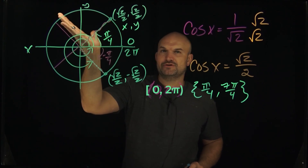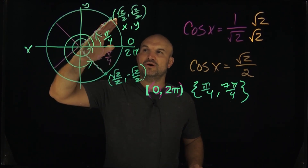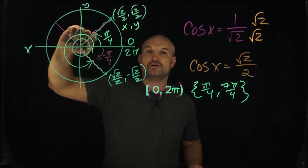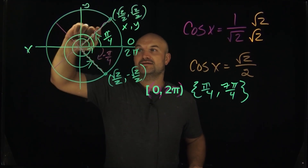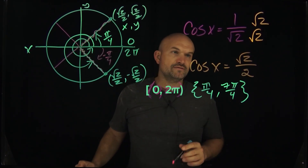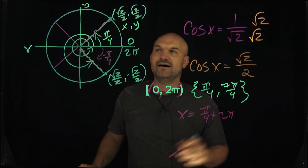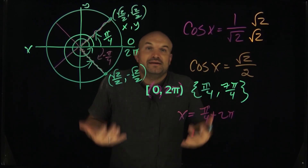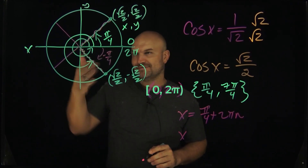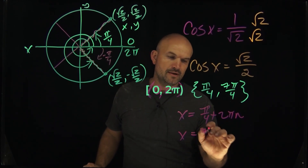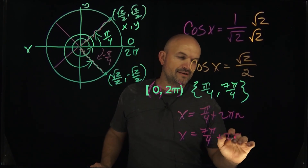But if I add another pi halves I don't get to a solution, so there's no repeating pattern between the two. The best way to find additional solutions is to add another full revolution — 2pi. You can keep adding 2pi or subtracting 2pi in either direction. So all the solutions are: x = pi/4 + 2pi*n, where n represents any integer. And since there's no relationship linking the two solutions, we also separately write x = 7pi/4 + 2pi*n. Those two expressions represent all the solutions.